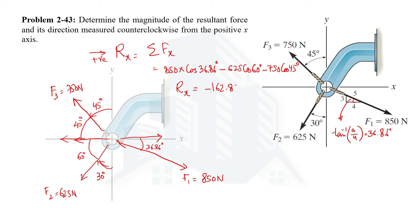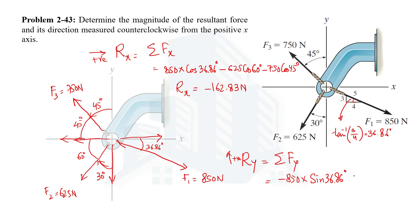Similarly, the y component of the resultant force equals the summation of all forces in the y direction, taking upward forces as positive. The y component of F1 is downward, so −850 × sin(36.86°). The y component of F2 is also downward: −625 × sin(60°). F3 has a positive (upward) y component: +750 × sin(45°).